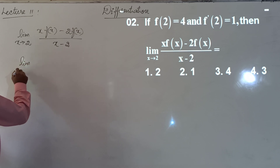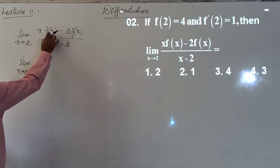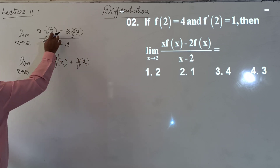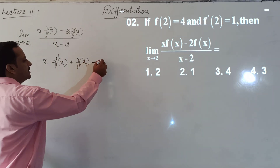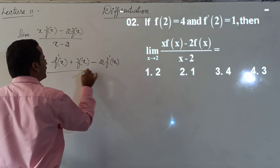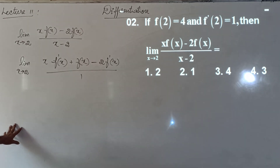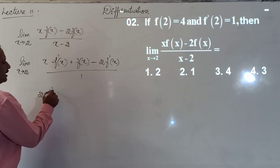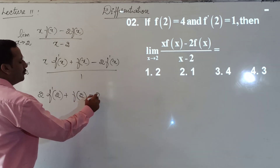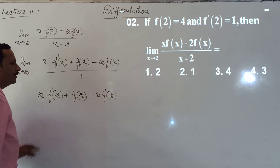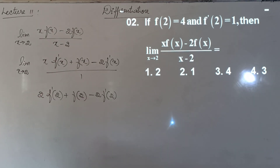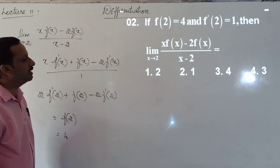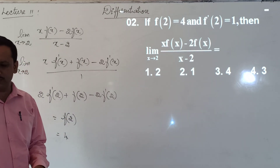We apply L'Hôpital's rule. Differentiating the numerator using the product rule: x·f'(x) + f(x)·1 − 2·f'(x), divided by the derivative of (x − 2) which is 1. Applying the limit as x→2 gives 2·f'(2) + f(2) − 2·f'(2) = f(2) = 4. That is the answer, which is the third option.